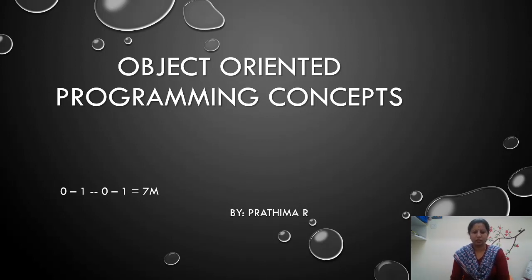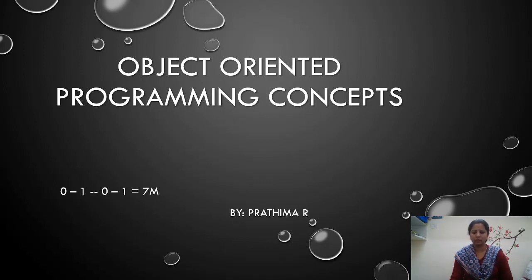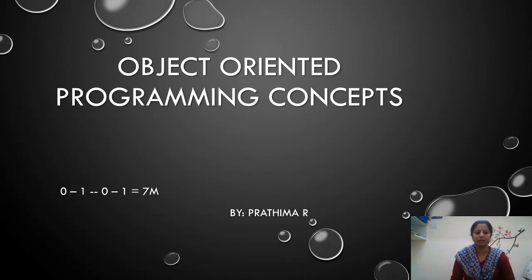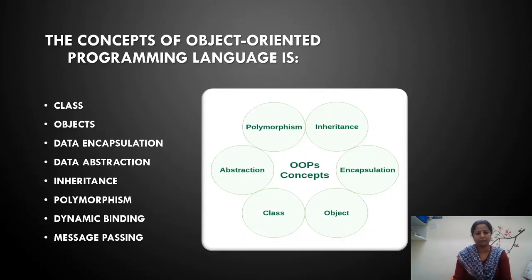Good morning students. Today we will discuss chapter number 6, that is object oriented programming concepts. The weightage of this chapter is 2 marks for 1 question and 5 marks for 1 question — easily you will get 7 marks. Only 4 different types of questions are there; among those, 2 different questions will come for you. All 4 are important — possible for 5 marks as well as 2 marks.